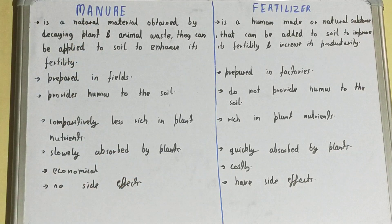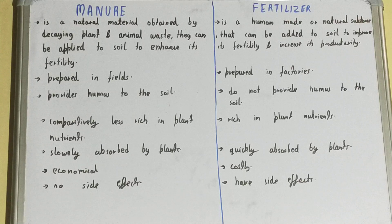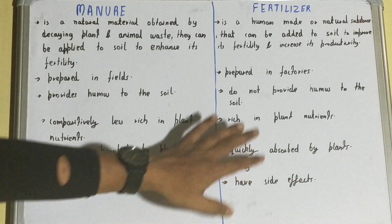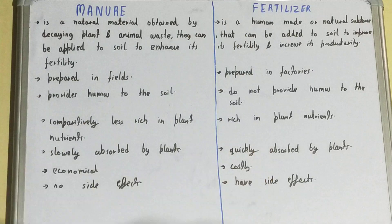Manure is economical — it is not costly at all, as you can easily arrange animal and plant waste. But fertilizer is costly because it is a factory-made substance.